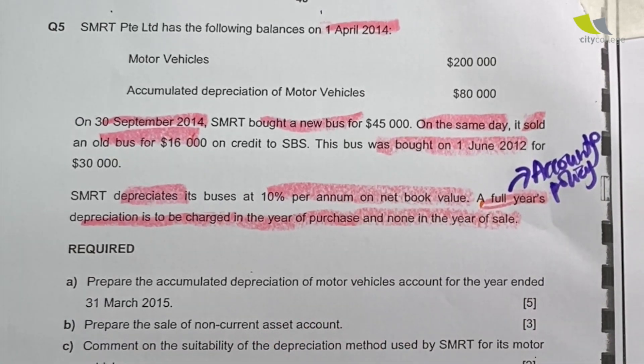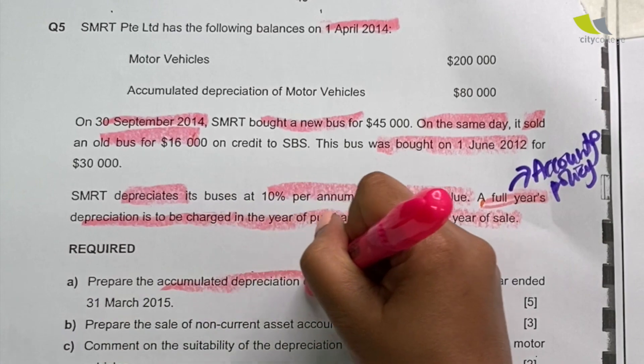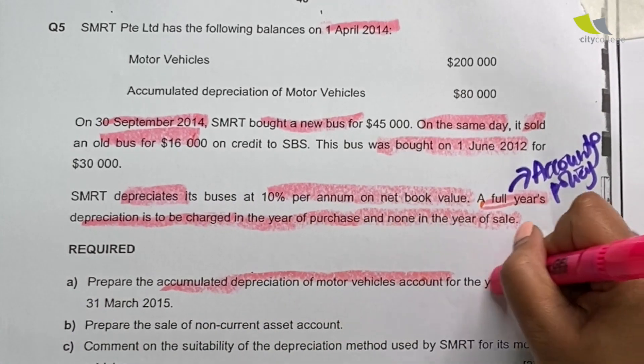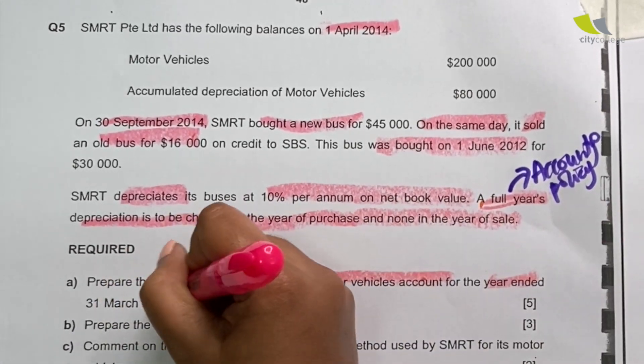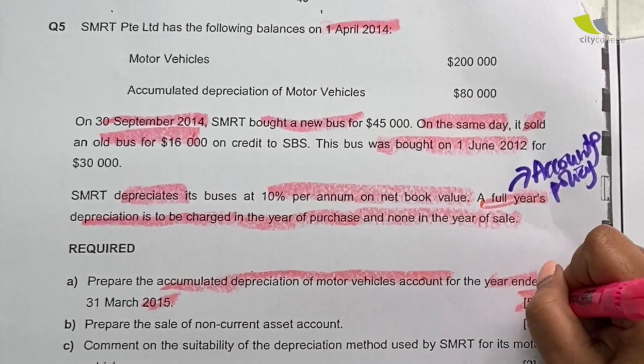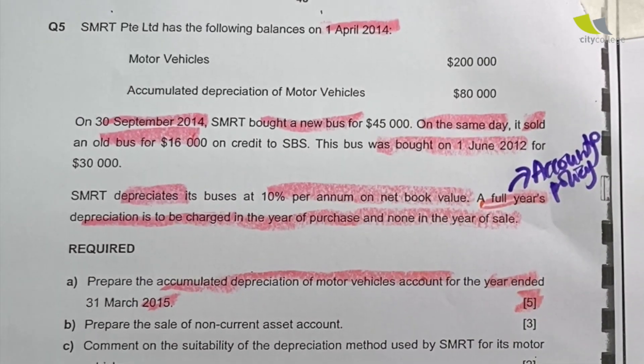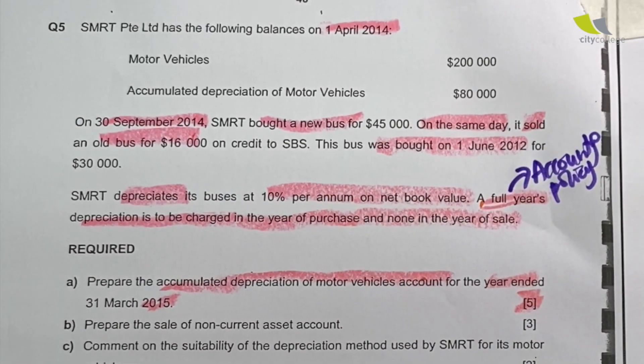So question A says, prepare the accumulated depreciation account for the year ended 31st March 2015. And this is a five mark question that a lot of students struggle with. I'm now going to show you how to use a timeline to actually tackle this question easily.